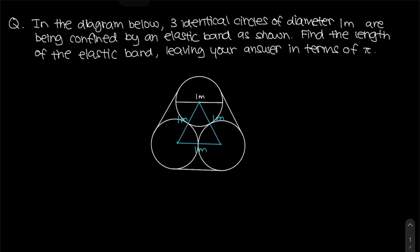Now notice that you can also draw a line segment that is perpendicular to where the end of the circle is. This segment is at 90 degrees — it is perpendicular. This means that this length will be one meter as well, because it is the same as one side of an equilateral triangle. We can do the same for the other sides.